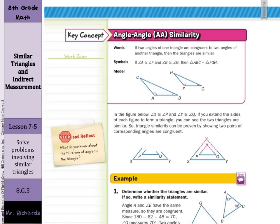Now, in the figure below, angle X is congruent to angle P and angle Y is congruent to angle Q. If you extend the sides of each figure to form a triangle, you can see the two triangles are similar. So, triangle similarity can be proven by showing two pairs of corresponding angles are congruent.